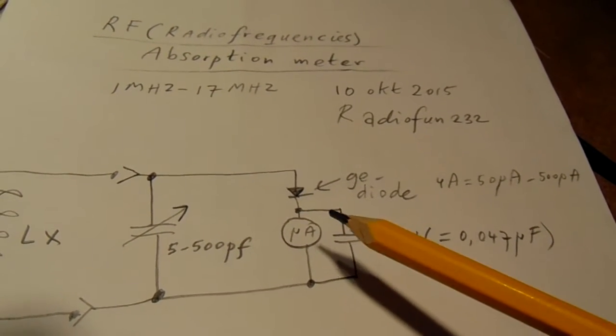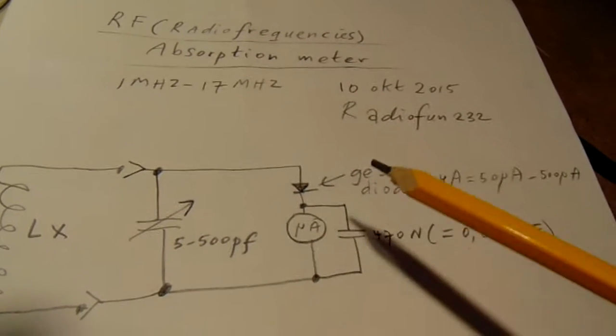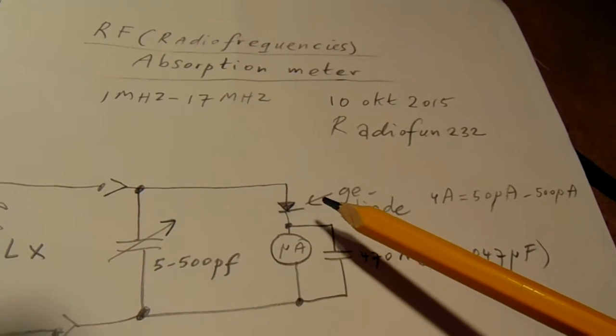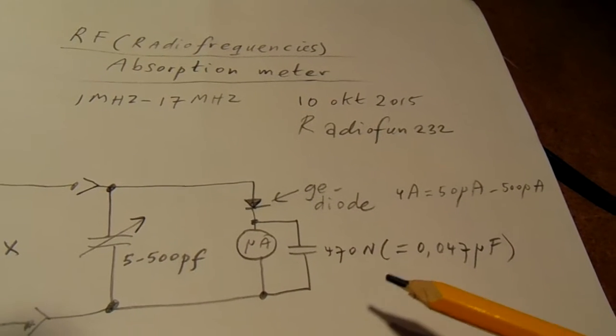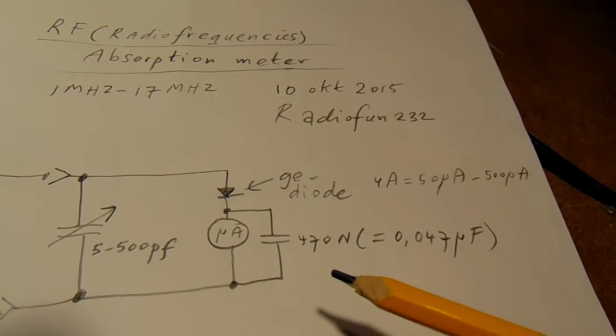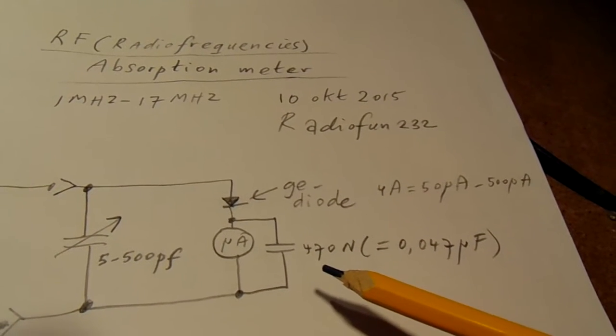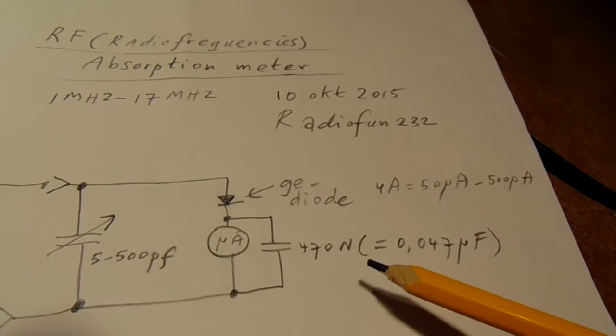Here we have an unknown coil with a capacitor that bridges that coil, so it's a tank circuit. Here we have a microampere meter, a germanium diode, and a capacitor of 470 nanofarads.